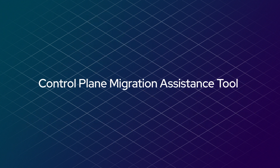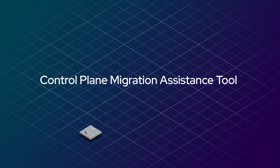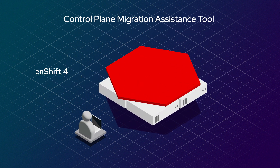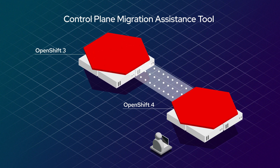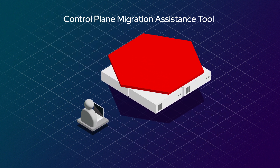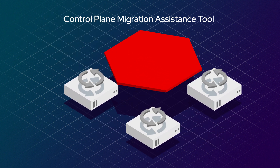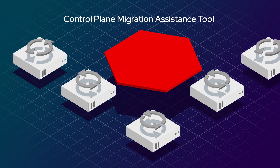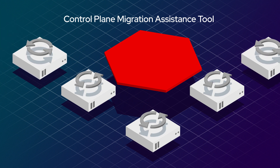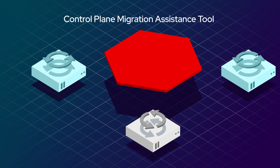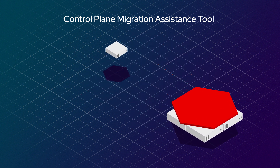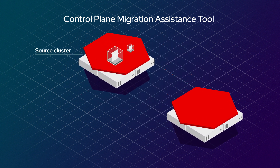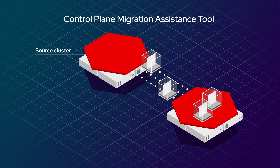The Control Plane Migration Assistance tool configures your new OpenShift cluster, matching when possible the settings in your source OpenShift 3 cluster. As the new OpenShift 4 cluster is spun up, you can use the Control Plane Migration Assistance tool to review which resources to apply. The new cluster is then ready to receive applications from the source cluster.